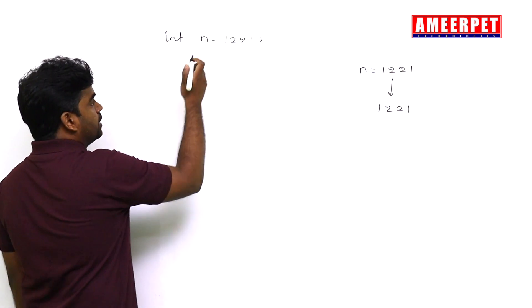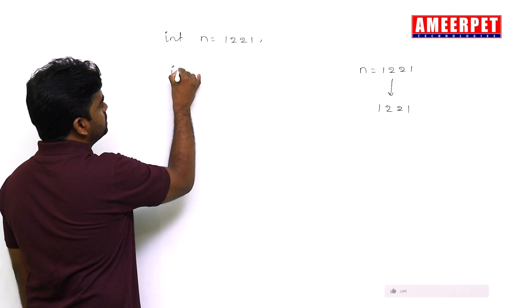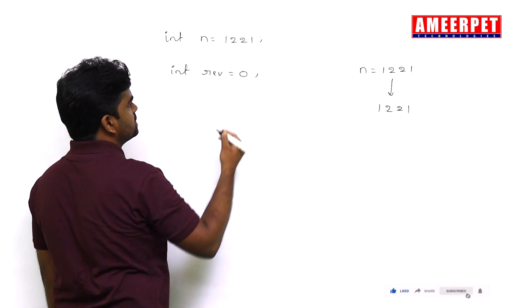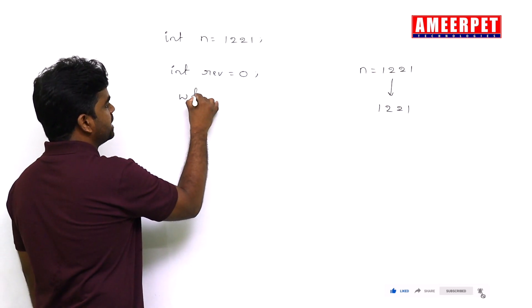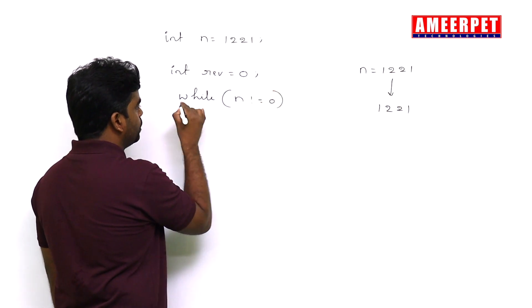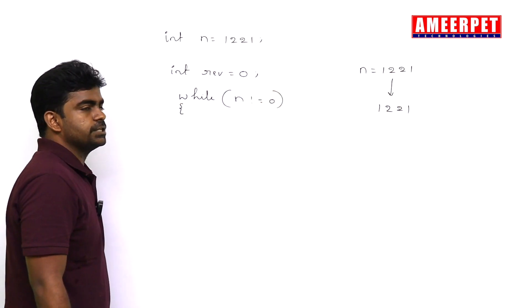So first we are taking the number. Now I am taking 1221 and I need to find out the reverse number. Initially, reverse starts with zero, and the condition is: while n is not equals to zero, until the n value becomes zero.